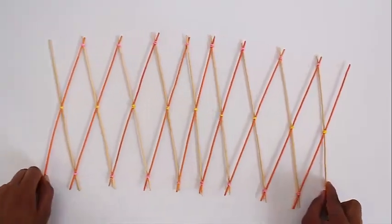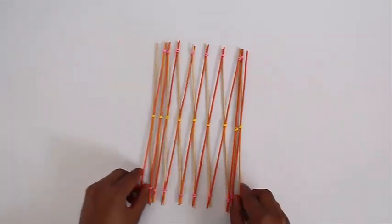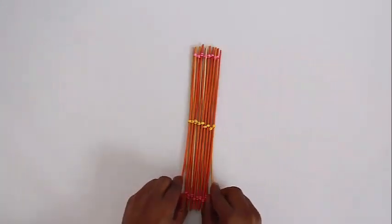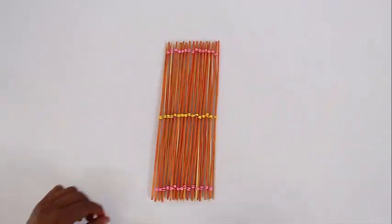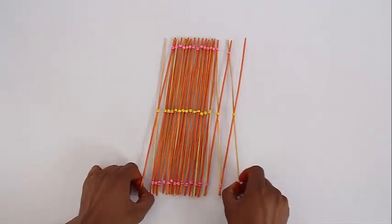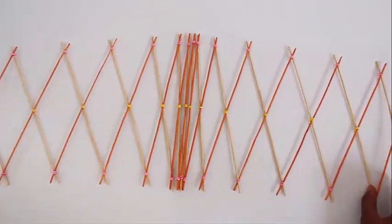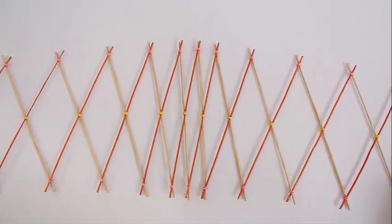This is a slightly longer lazy tongs with many more sticks and rubber bands. You would see that there are three rubber bands, one on the top, one in the middle and one at the bottom. And this is a really long lazy tongs using all the 32 sticks.